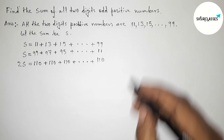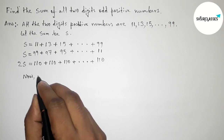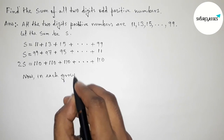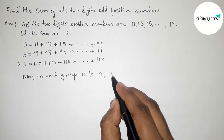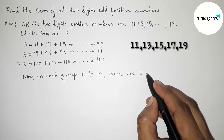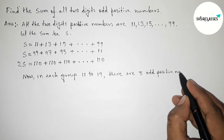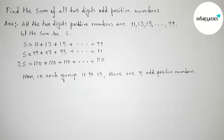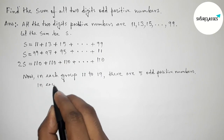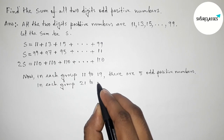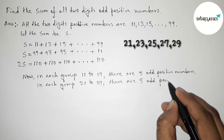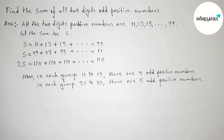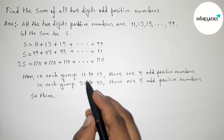Now I am going to divide all the two-digit odd positive numbers into groups such that each group has five odd numbers. The first group is from 11 to 19: that gives 11, 13, 15, 17, 19 — five odd positive numbers. Similarly, the next group from 21 to 29 gives 21, 23, 25, 27, 29 — five odd positive numbers.